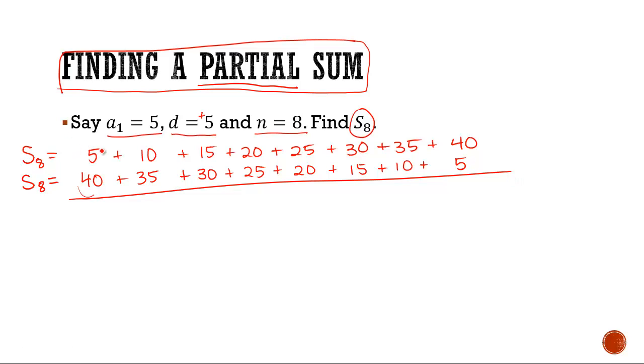What do you notice about each term now? Well, each of these is adding up to 45. Look at that. When you reverse the terms, the first and the last, and then the second and the second to last, and so on, you'll notice that the sums are always the same. And this comes based on the nature of the arithmetic sequence.